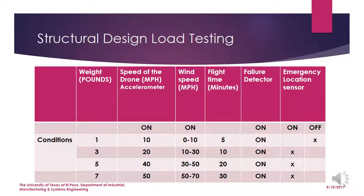We are planning to test the subsystem using conditions shown in the table. We will carry weights from zero to seven pounds, with and without flight time. For example, at three pounds, speed is 10 mph with zero to 10 mph wind speed over five minutes of flight. At five pounds, speed is 40 mph with a 20-minute flight time and zero to 10 mph wind. The subsystem must satisfy every condition. A failure detector records subsystem failures, and an emergency location sensor locates the drone if unusual behavior occurs.